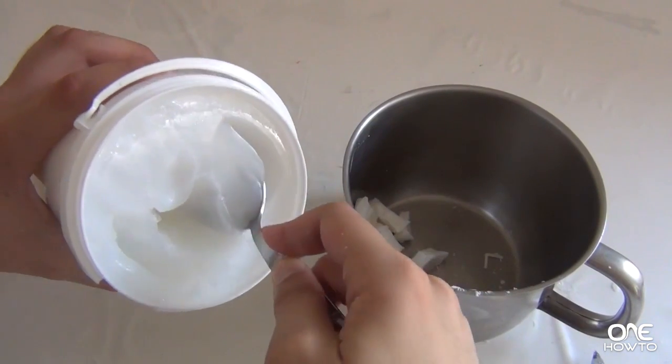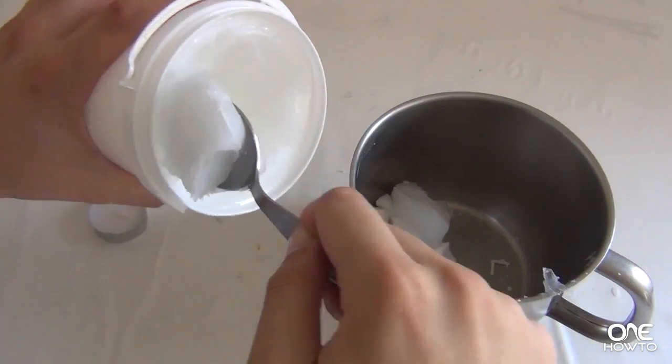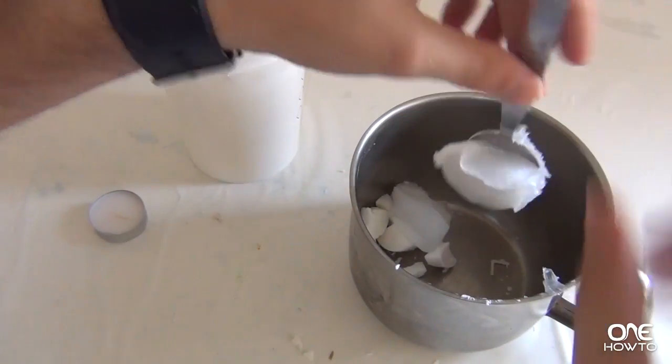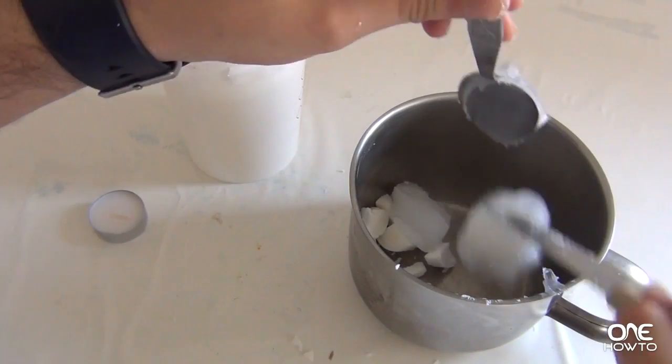As we've used three candles we're going to add two spoonfuls of Vaseline. Our ingredients are ready so now it's time to boil them.